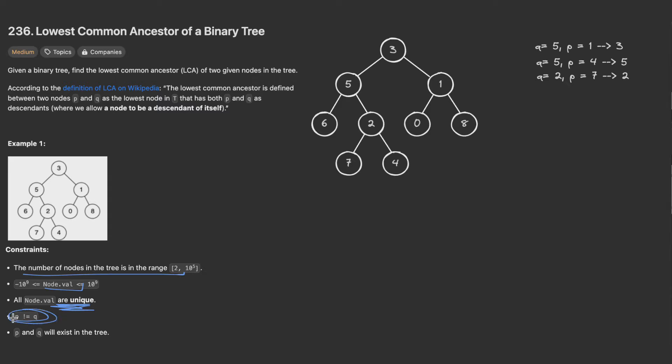Which is super important is that all the values of the nodes are unique. Also, P is different from Q. And finally P and Q will exist in the tree. So we don't have these edge cases to check before.